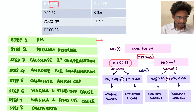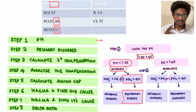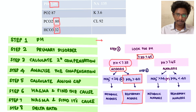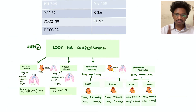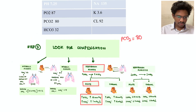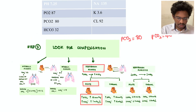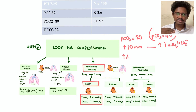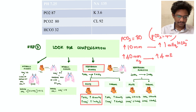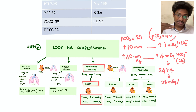Step one: pH is less than 7.35 — acidosis. Step two: PCO2 is more than 40 — respiratory acidosis. Step three: compensation. He has an acute presentation, so for every 10 mmHg increase in PCO2, there is 1 mEq increase in bicarb. PCO2 rose from 40 to 80 — an increase of 40 — so bicarb rises from 24 by 4 units to 28. The actual bicarb is 32, which is more than 28 — it is over-compensated.